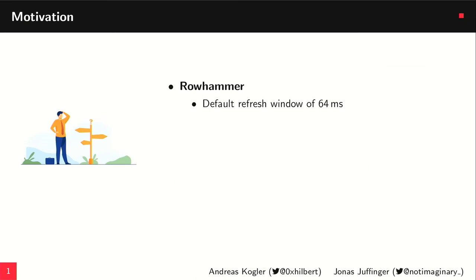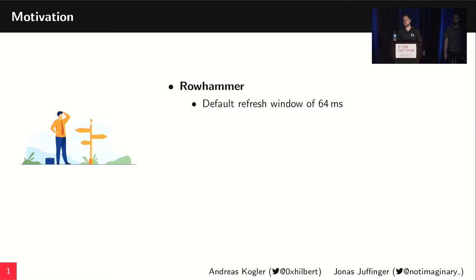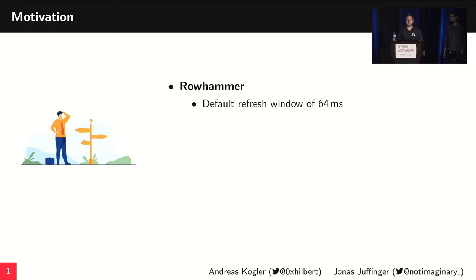The motivation behind HalfDouble is basically Rowhammer. Rowhammer is a hardware effect discovered in 2014. It found that if you access a physical memory location very often, you have disturbances that can travel and influence neighboring physical locations. If you accumulate these disturbances over 64 milliseconds — the refresh window of a RAM module — they can manifest as a bit flip in a target row.